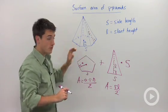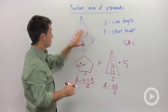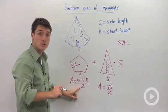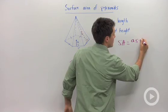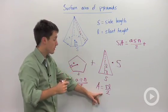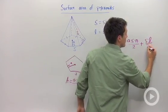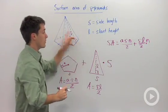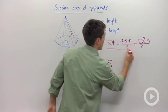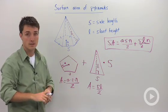So if you want to calculate the surface area of a regular polygon pyramid, you're going to need to add up the area of the base, which is A times S times N divided by two, and then you're going to need to add in however many triangles you have that are congruent. So that's going to be S times L divided by two, times N, where N is the number of sides. This formula will calculate the surface area of any pyramid with a regular polygon as a base.